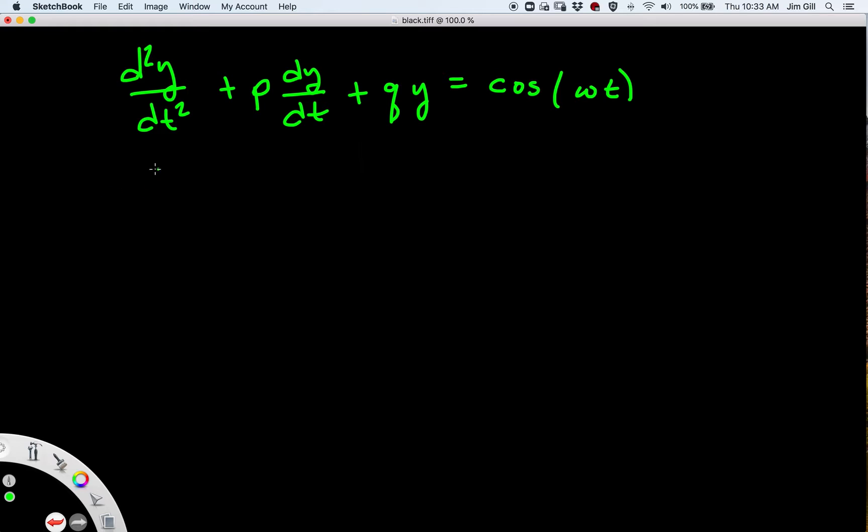Okay, looking at this equation we have three parameters. We have p, we have q, and we have omega, and they're all positive.